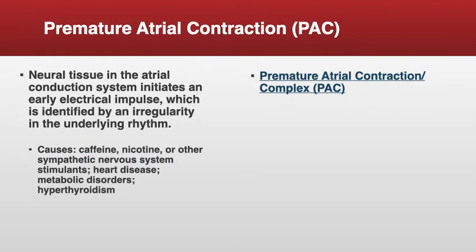A PAC is a premature atrial contraction — an atrial conduction system that initiates an early electrical impulse and is identified by an irregularity in an underlying rhythm. Causes can be caffeine, nicotine, some sympathetic nervous system stimulants, underlying heart disease, metabolic disorders, and hyperthyroidism.